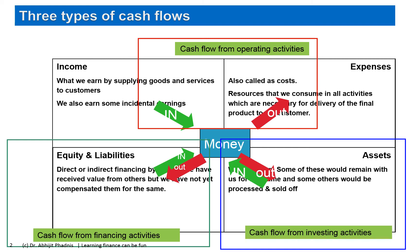The left-hand pair is about financing. Equity and debt are the two main sources of finance — money that comes into the business as inflow. But we also need to service them: pay interest, pay dividends, and repay loans. All of that is outflow. That pair is called cash flow from financing activities, and we will discuss these pairs in greater detail in later videos.